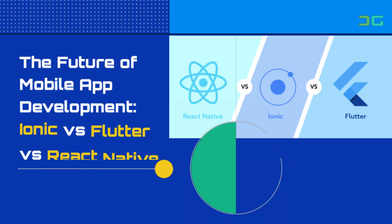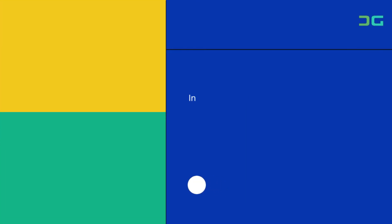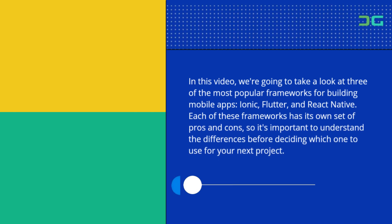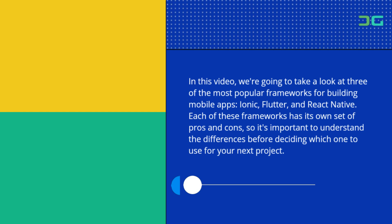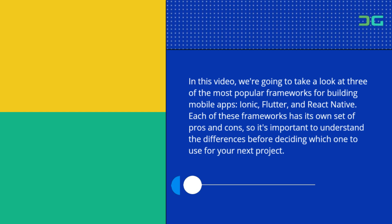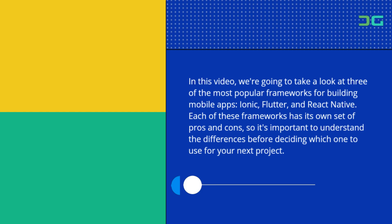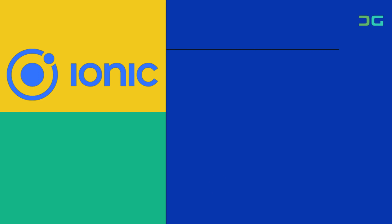Welcome to our video on the future of mobile app development. If you're a developer or just someone who's interested in the world of app building, you're in the right place. In this video, we're going to take a look at three of the most popular frameworks for building mobile apps – Ionic, Flutter, and React Native. Each of these frameworks has its own set of pros and cons, so it's important to understand the differences before deciding which one to use for your next project.